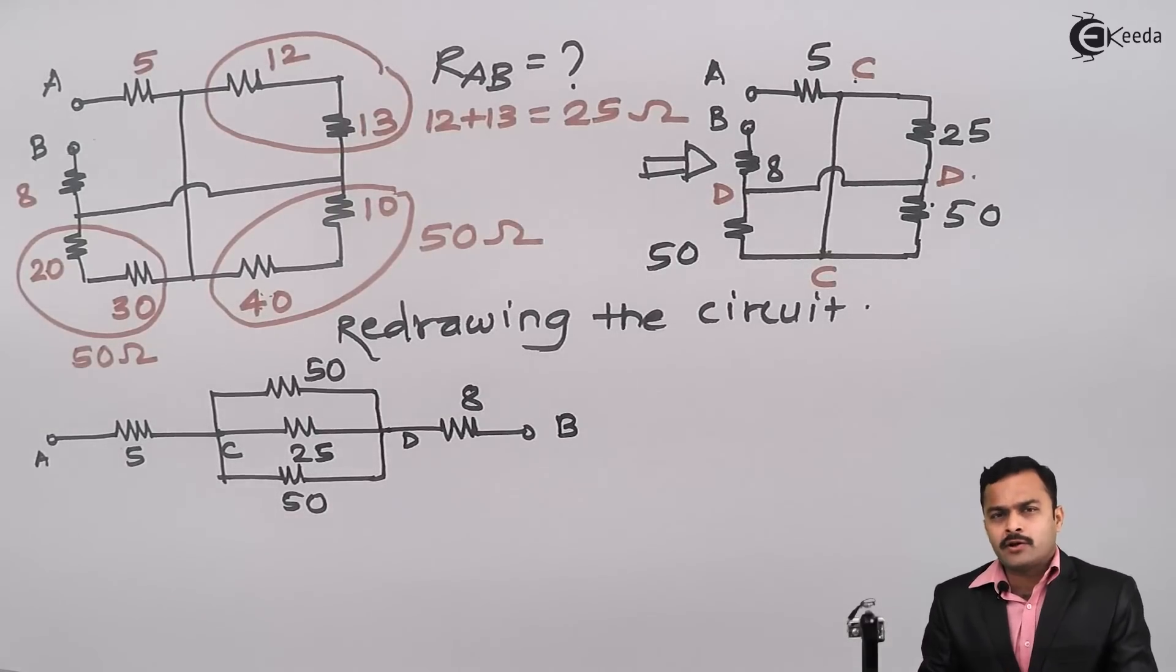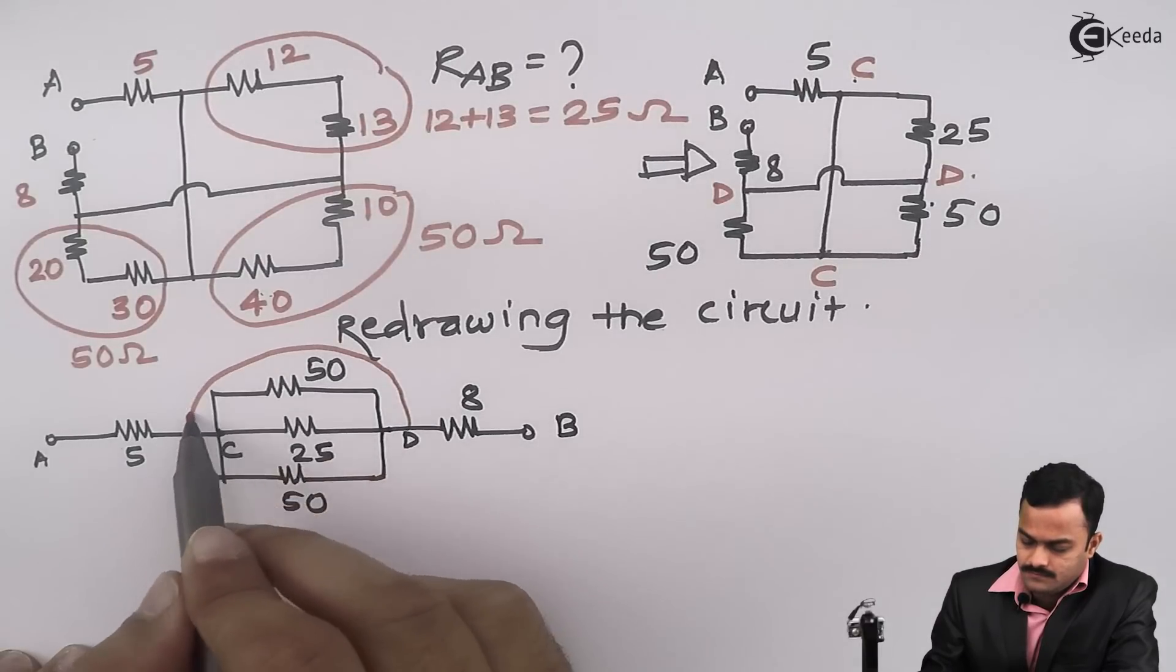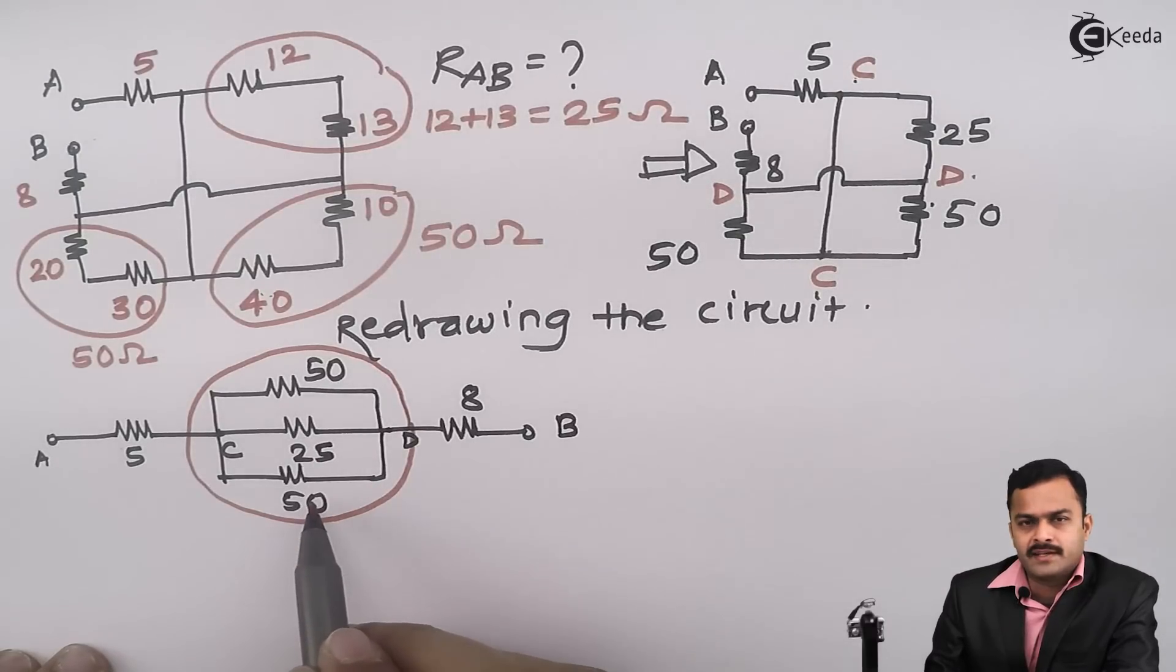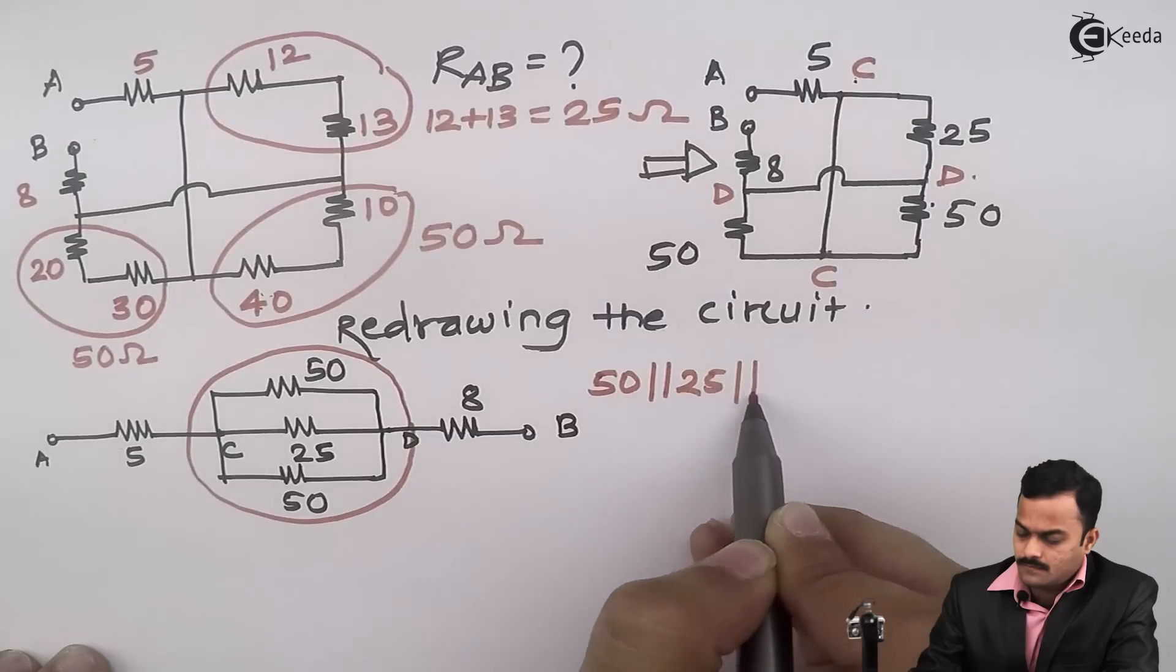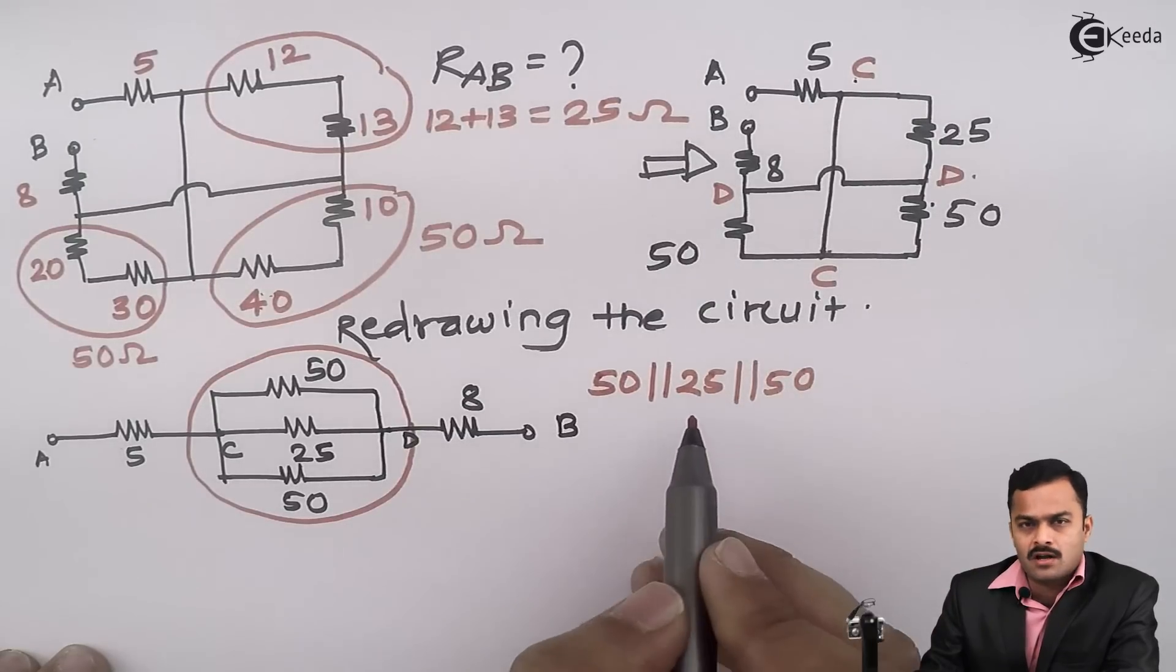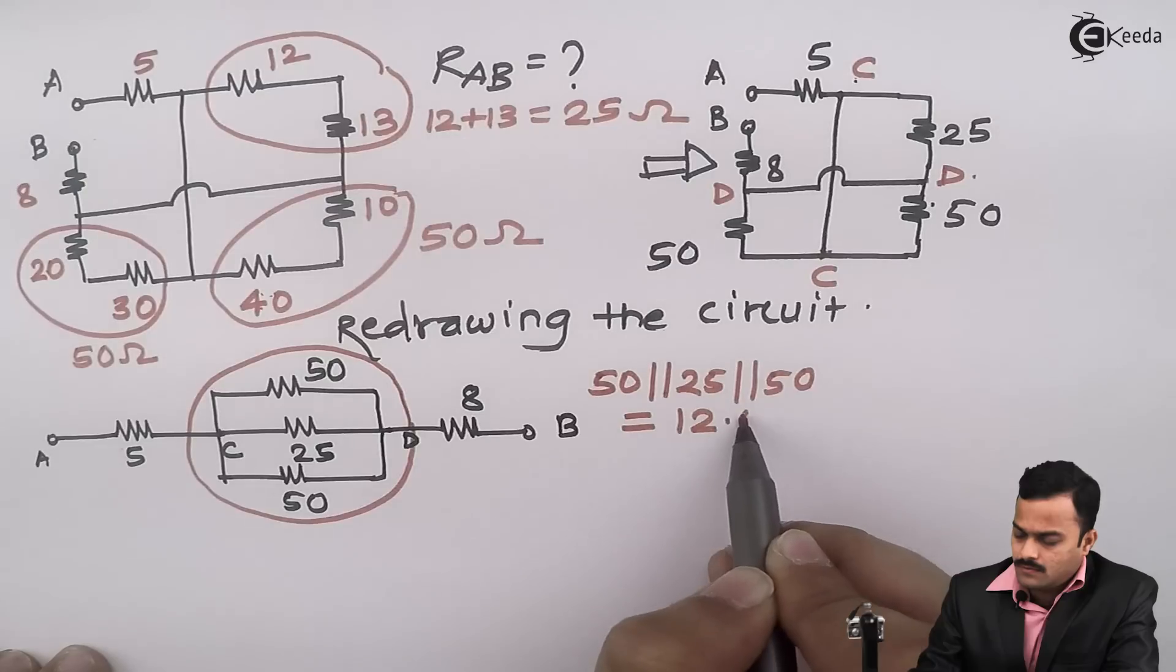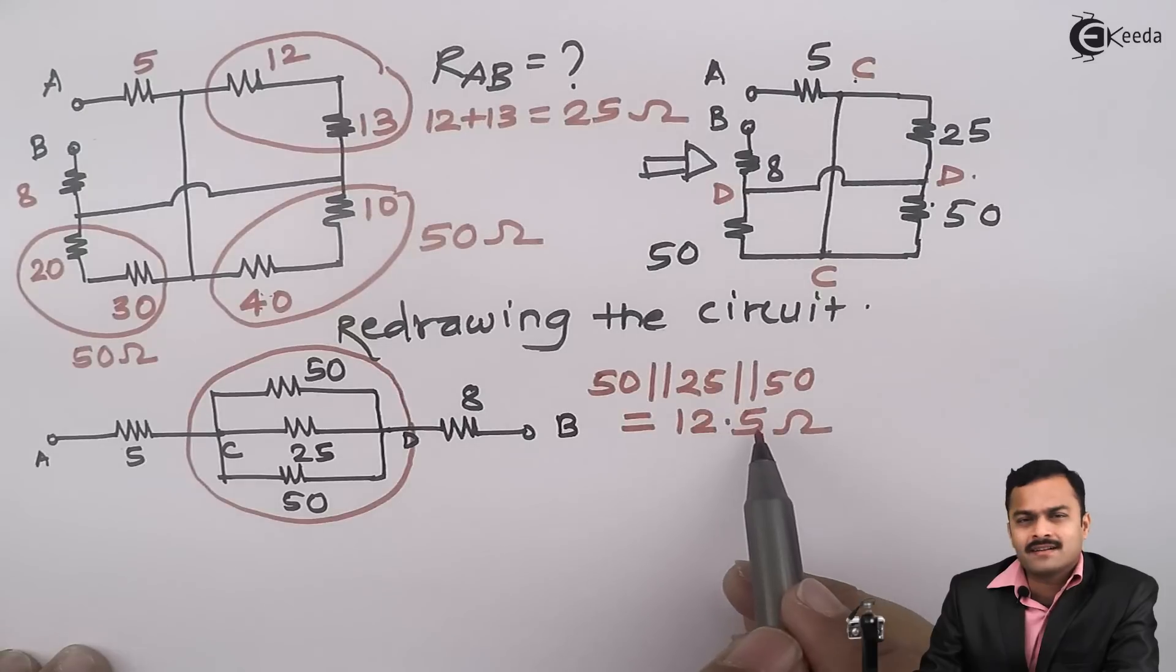So after redrawing the circuit I could make out there is one combination which is in parallel, which is 50, 25 and 50 are in parallel. And if you solve you will get the equivalent of these three, it is 12.5 ohm.